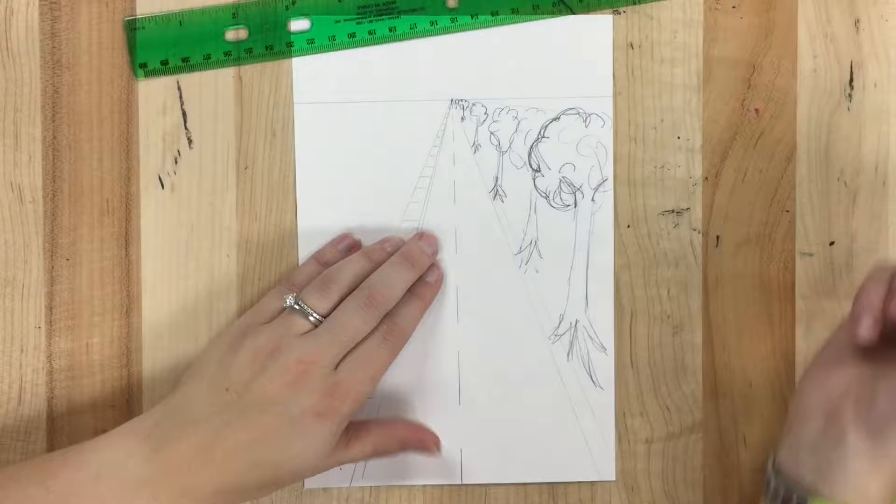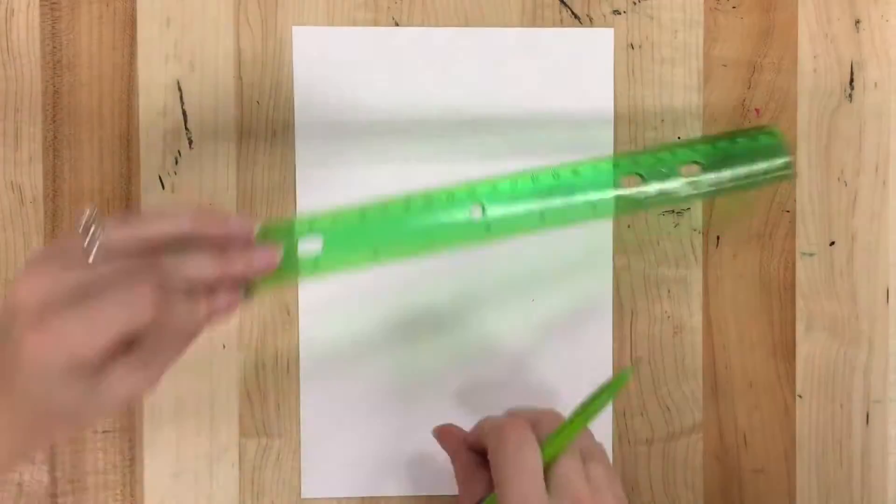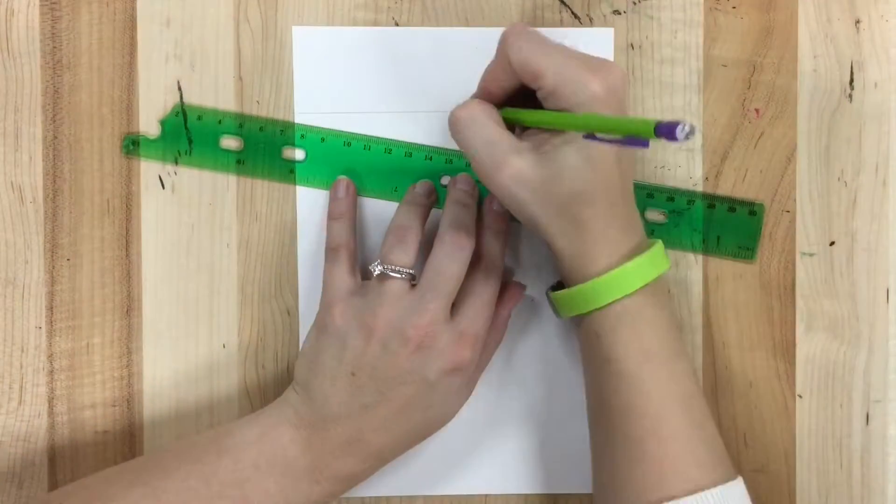Something you might want to add to your road drawing is a line of trees, a line of lampposts, or even a sidewalk. Those are all done sort of the same way.